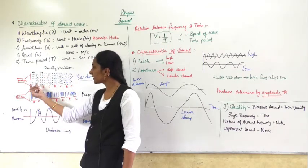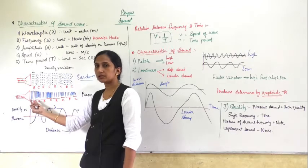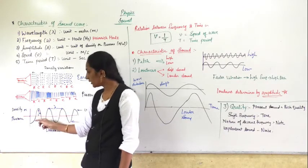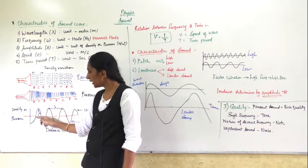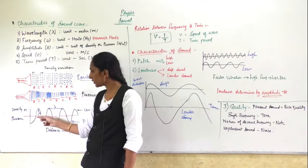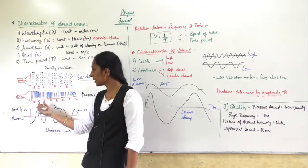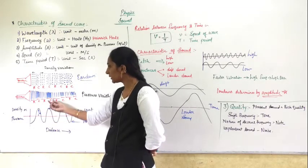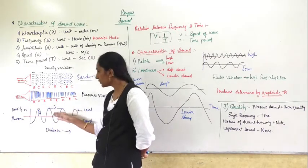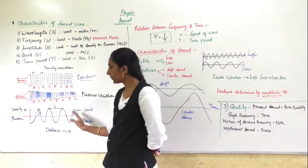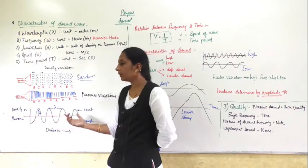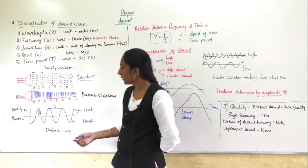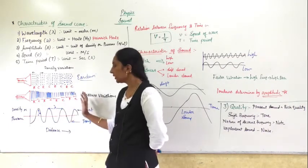Where there is rarefaction, density is less and pressure is also less, so it goes below the line — rarefaction is shown below the line. Where there is compression, there is high density and high pressure, so the peak is high — it goes above. Then rarefaction again goes below, then compression goes high again. This is how the wave is drawn. That is why it is said that sound is a wave, or sound travels in a wave pattern, just as light travels in a straight line. This waveform is drawn using the two conditions of density and pressure.